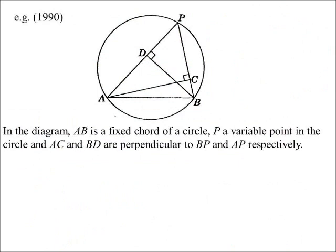Let's have a look at some questions. This is a really old one, 1990. So AB is fixed. P moves around the circumference. And we know that AC and BD are always drawn in perpendicular to whatever those lines are.